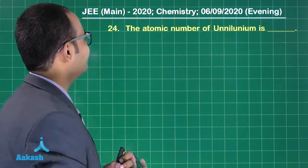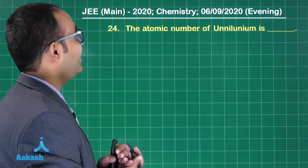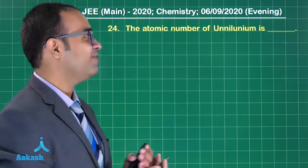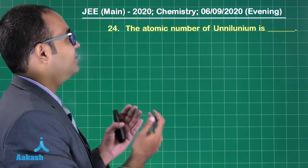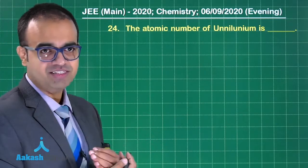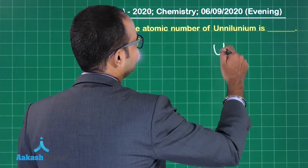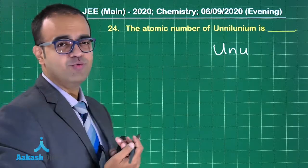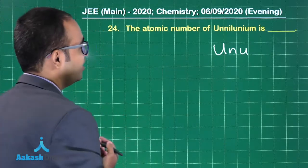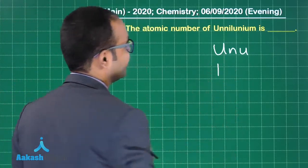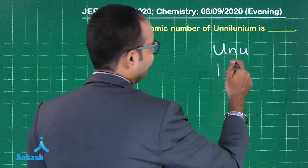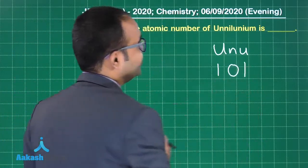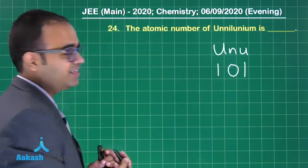The atomic number of Unilunium. If I know this, I can write the symbol. What is the symbol? It is U-N-U according to IUPAC. U stands for 1, N stands for nil (that is 0), and U stands for 1.